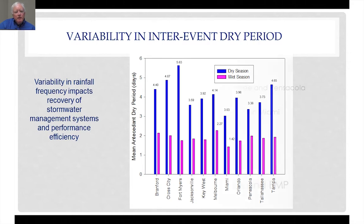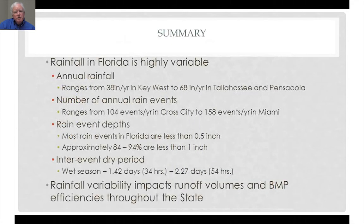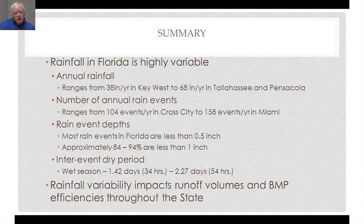In summary, rainfall in Florida is highly variable, ranging from 66 to 68 inches per year in Tallahassee and Pensacola to 38 inches per year in Key West. There is large variability in the number of annual rain events. Most rain events in Florida are less than half an inch, and approximately 84 to 94 percent are less than one inch. Inter-event dry periods are highly variable for both wet and dry season conditions, affecting the efficiencies of stormwater BMPs. Rainfall variability is important to understand because it impacts both runoff volumes and the effectiveness of BMPs within the State of Florida.